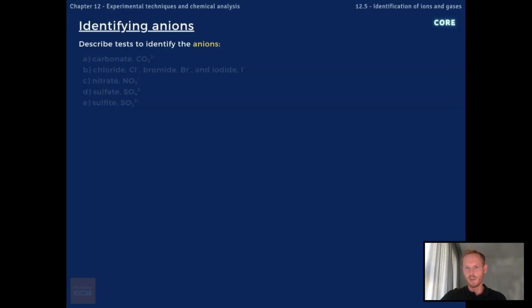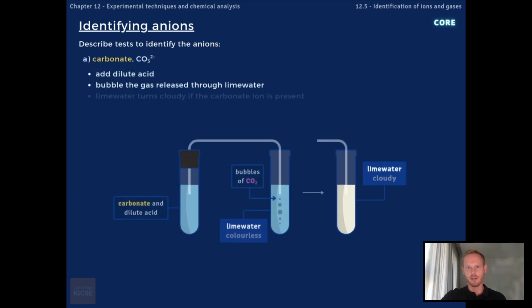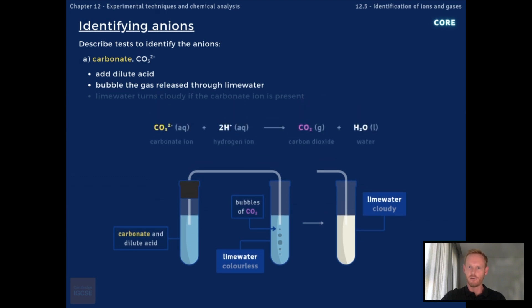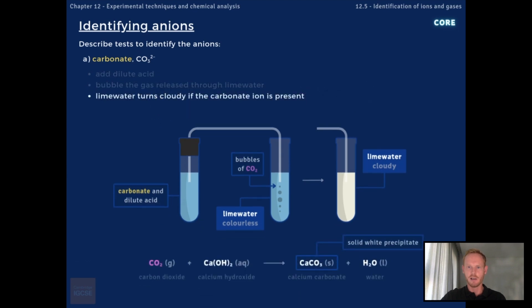You need to describe chemical tests to identify negatively charged ions or anions. To test for the presence of carbonate ions, CO3²⁻, add a dilute acid such as hydrochloric acid to the sample and bubble the gas produced through aqueous calcium hydroxide or lime water. Carbonate anions react with hydrogen cations from the acid to produce carbon dioxide gas and water. The carbon dioxide reacts with aqueous calcium hydroxide to produce a solid white precipitate of calcium carbonate, which turns the lime water cloudy.